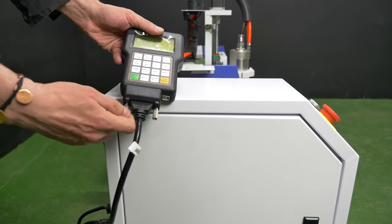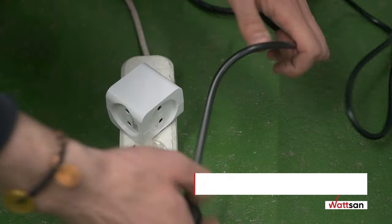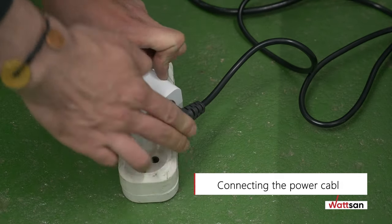Connect the connection cable of the main controller to the controller. Connect the power cord to the power outlet.